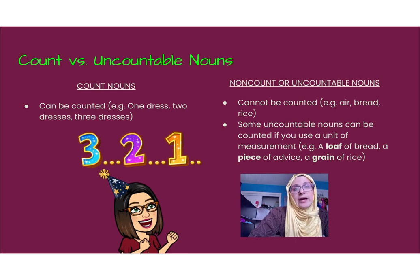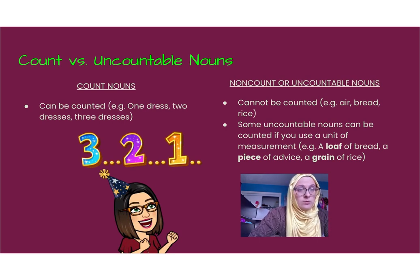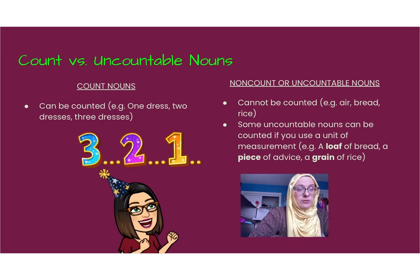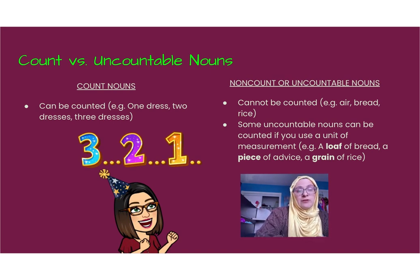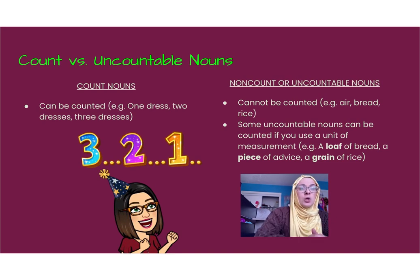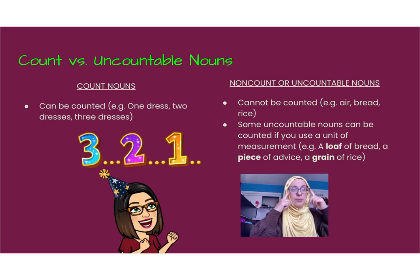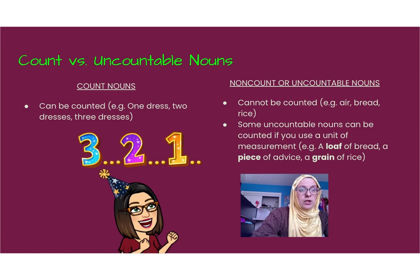Let's talk a little more about count versus uncountable or non-count nouns. Count nouns can be counted — that's why they're called count nouns. You can have one dress, two dresses, three dresses. But non-count nouns cannot be counted: things like air, bread, rice, or nouns that are always plural like glasses or pants. For these nouns, we can count them if we use a specific unit of measurement or counter — for example, one loaf of bread, a piece of advice, a grain of rice, a pair of glasses, or a pair of pants.